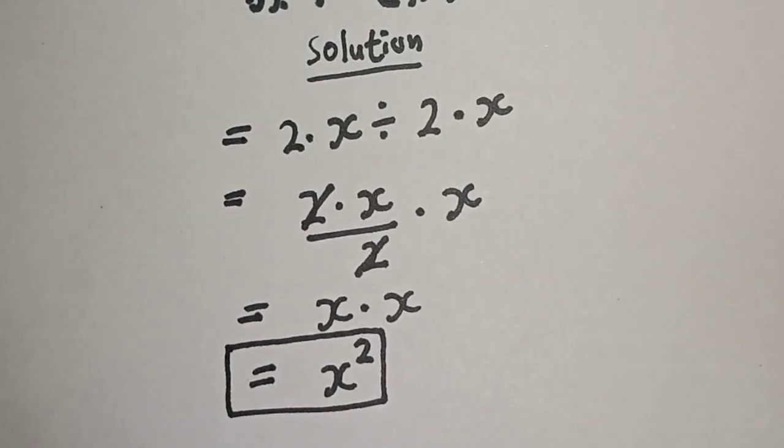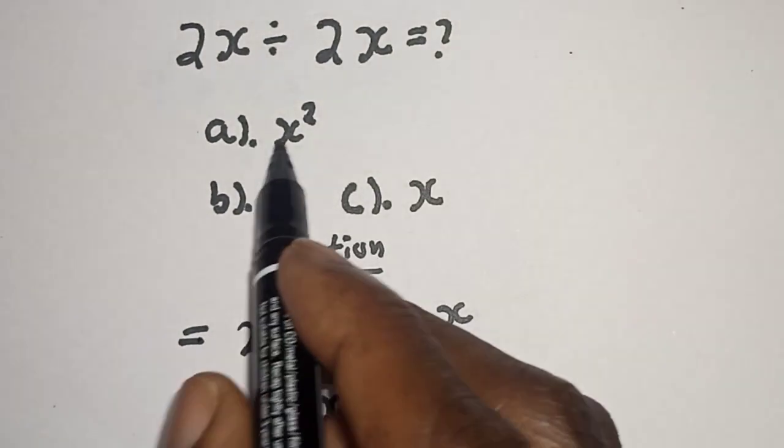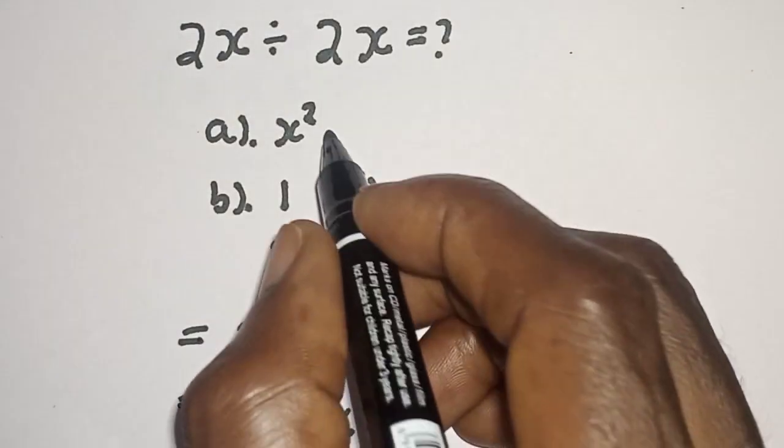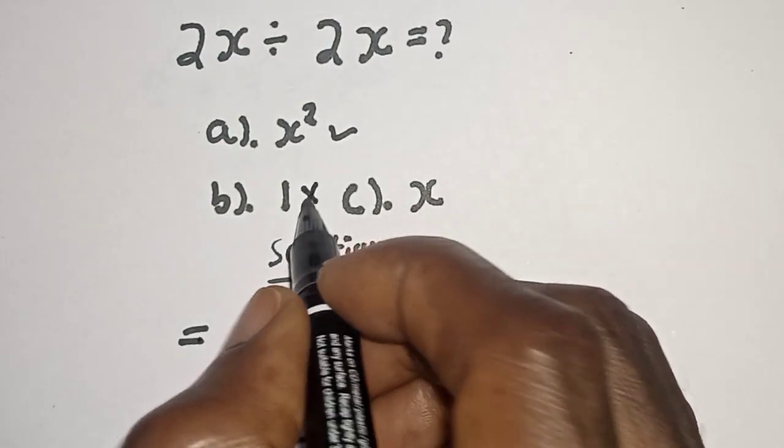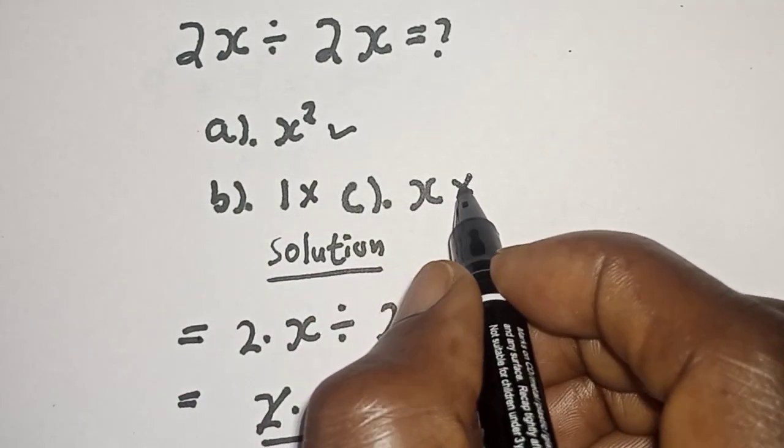b is 1 - this is wrong. c is x - this is wrong.